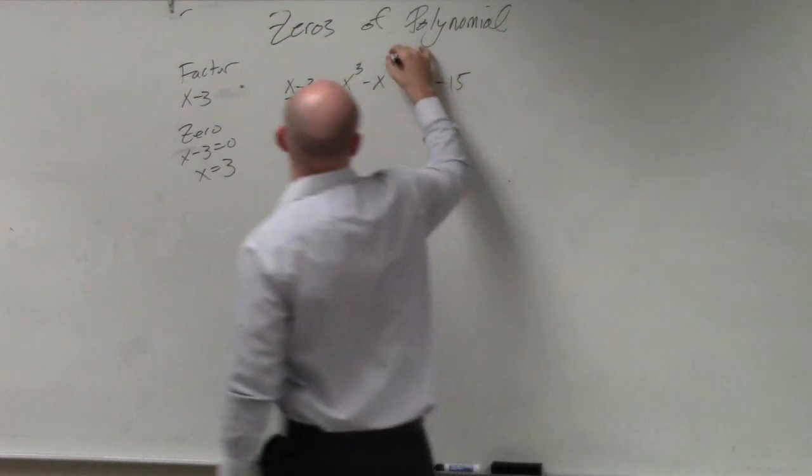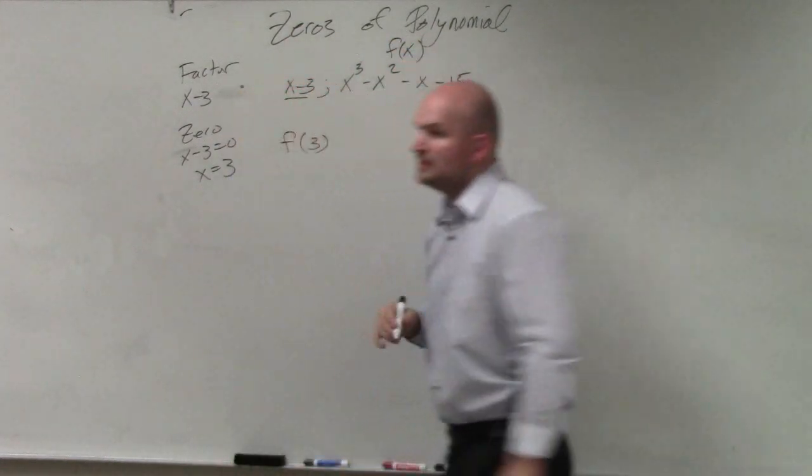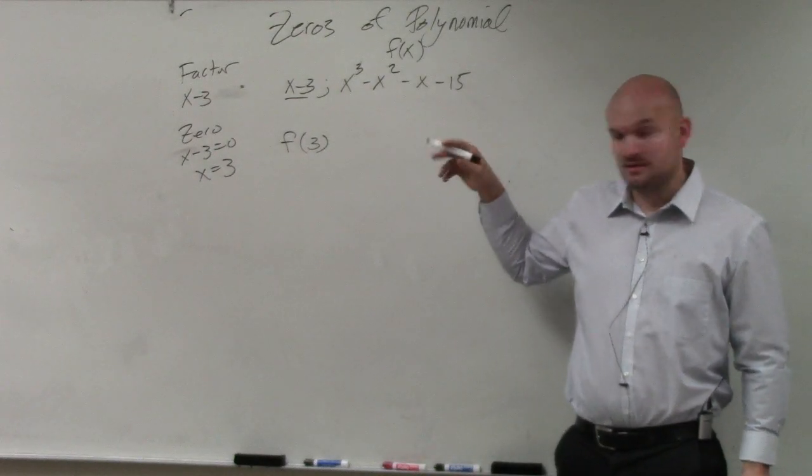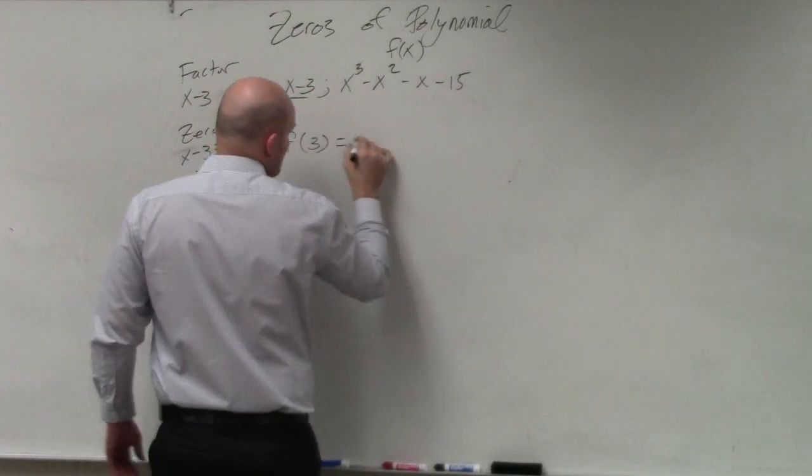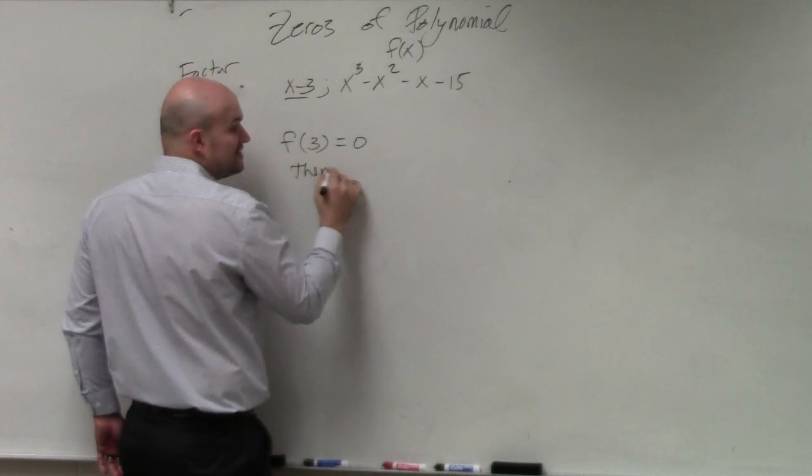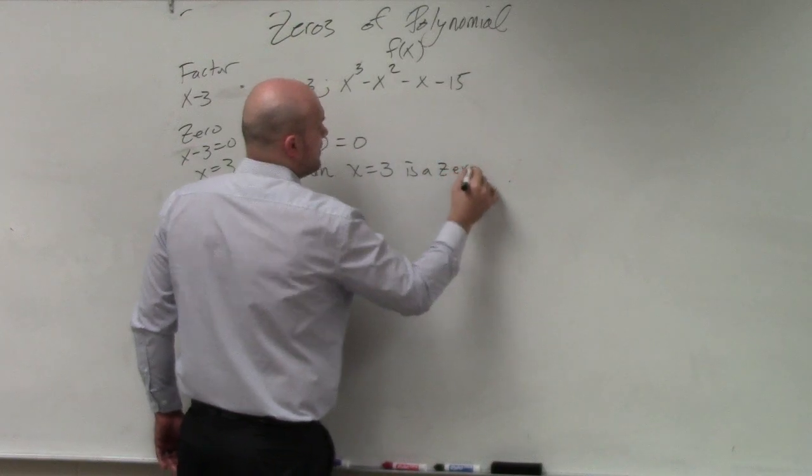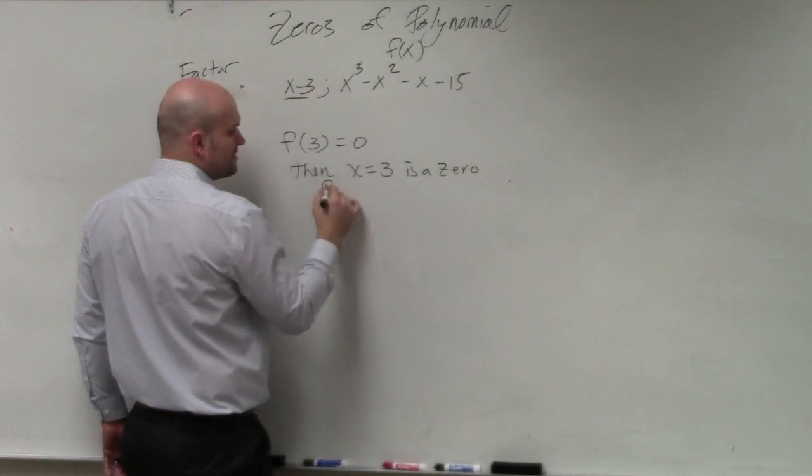So let's call this f of x. So if we plug 3 in for x of this function, if we get 0, then the remainder theorem said x equals 3 is a 0. That's what the remainder theorem was.